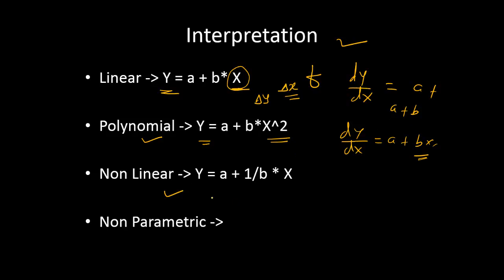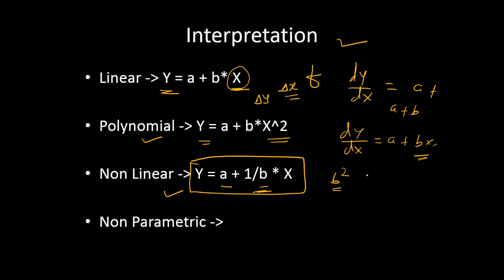Now let's see the third type of model: non-linear models. A non-linear model is one where the model is non-linear in parameters. For example, having 1/b means b is the parameter and that is a non-linear term. There are two parameters a and b and it is non-linear in parameters — had it been b² or logarithm of b, those are also non-linear. The polynomial model is non-linear in the attribute x but linear in its parameters, whereas this type is non-linear in parameters, making it even more difficult to interpret.